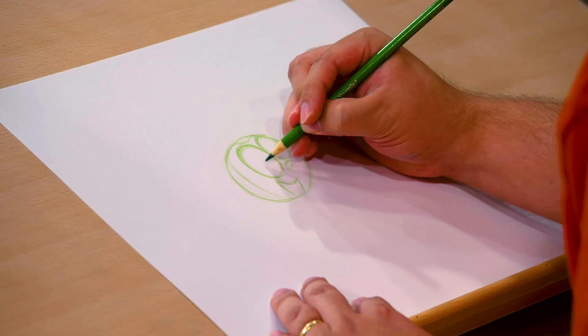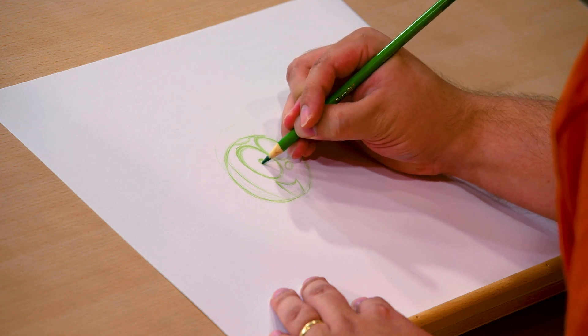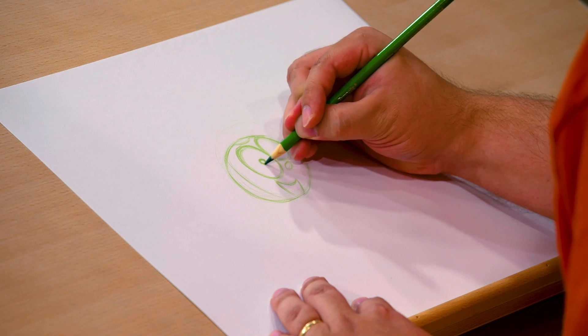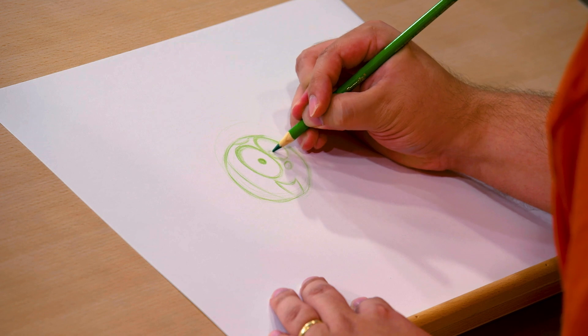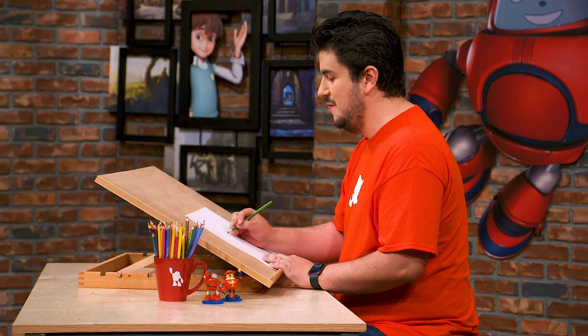We'll go ahead and put in her pupils, which again are going to be in perfect circles, as perfect as we can get. You can see I'm doing it over and over and over again to try to get as round as possible. So there's kind of most of Widget.